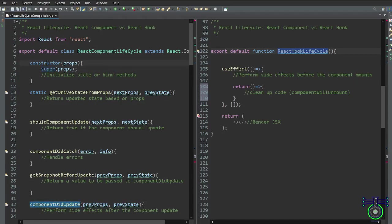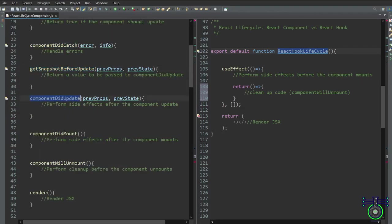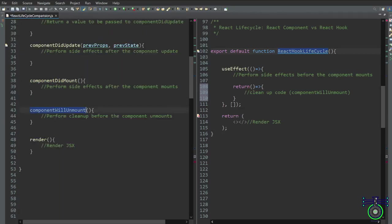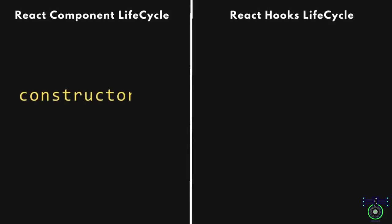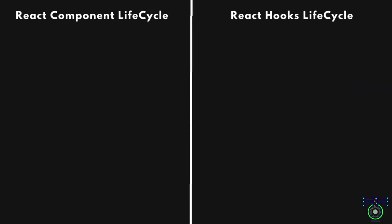We have now explored the equivalences between React class components and hooks for various lifecycle methods. Let's take a quick look at some practical examples of each function in action so you can see how they work in real-time applications. First, let's check the constructor equivalent. Inside the useEffect block, we call fetchInitialData — a function assumed to perform actions typically done in a constructor. It's a placeholder for any setup logic that needs to happen when the component mounts. The empty dependency array as the second argument ensures the effect runs only once after the initial mount.